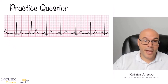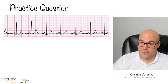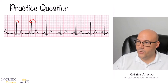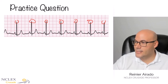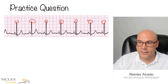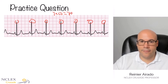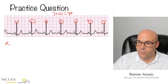Since this is a six-second strip, we can use the easy heart rate method. We count the R waves: 1, 2, 3, 4, 5, 6, 7 — times 10. So the heart rate is 70.